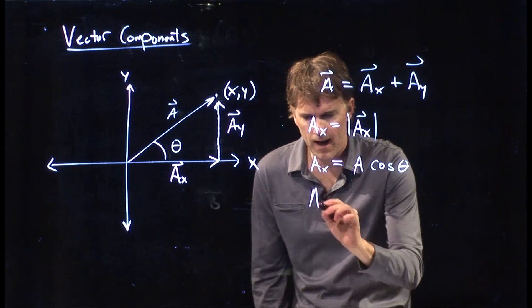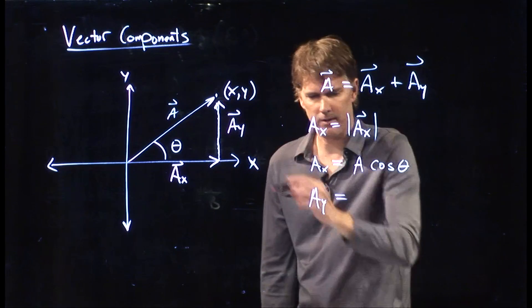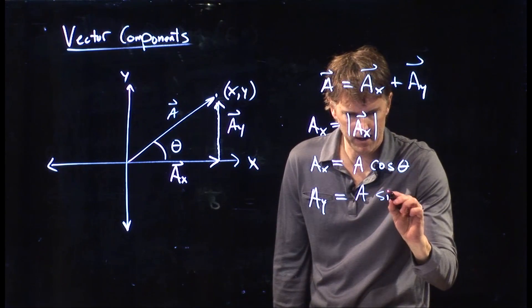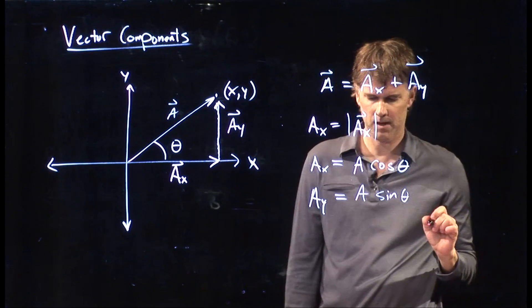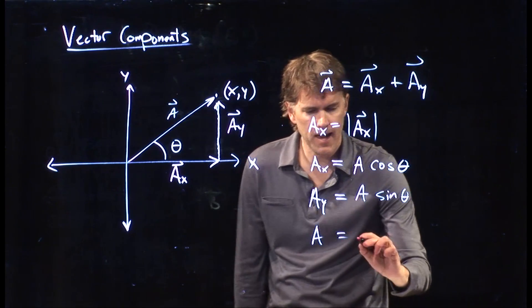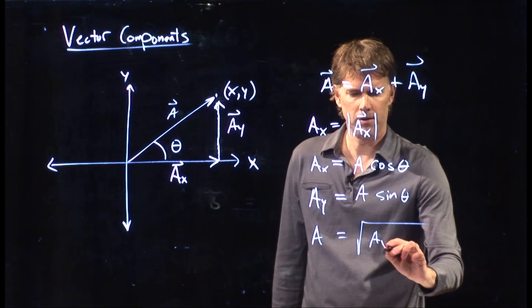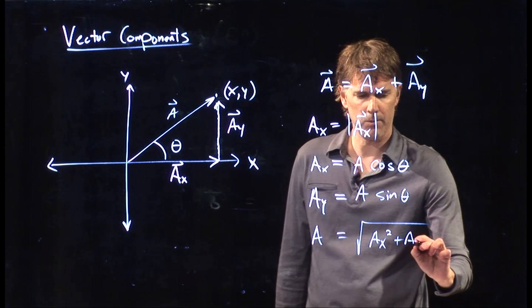A sub y is this side of the triangle, which is of course just a sine theta. And the magnitude a is just the square root of a x squared plus a y squared.